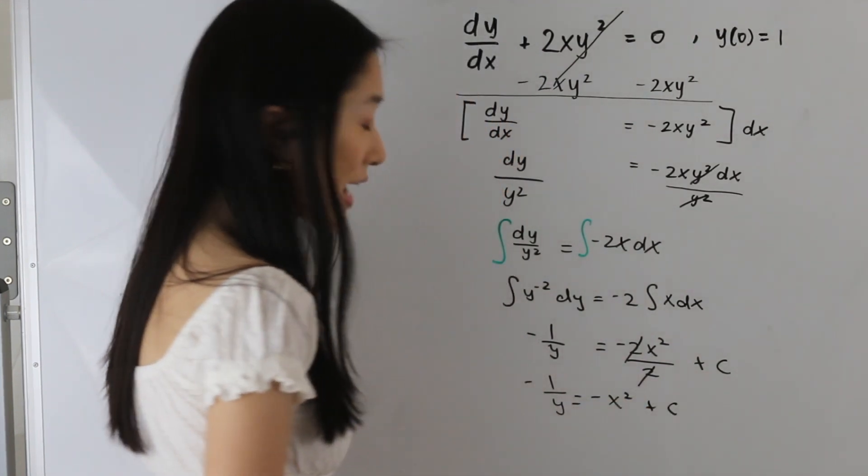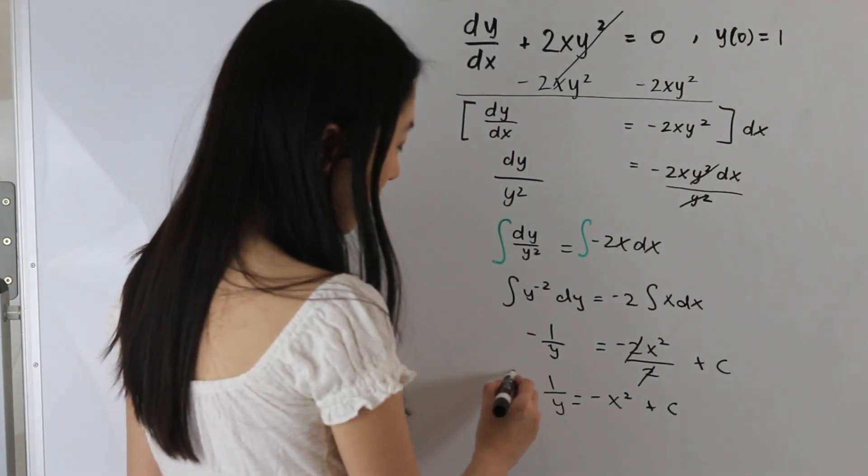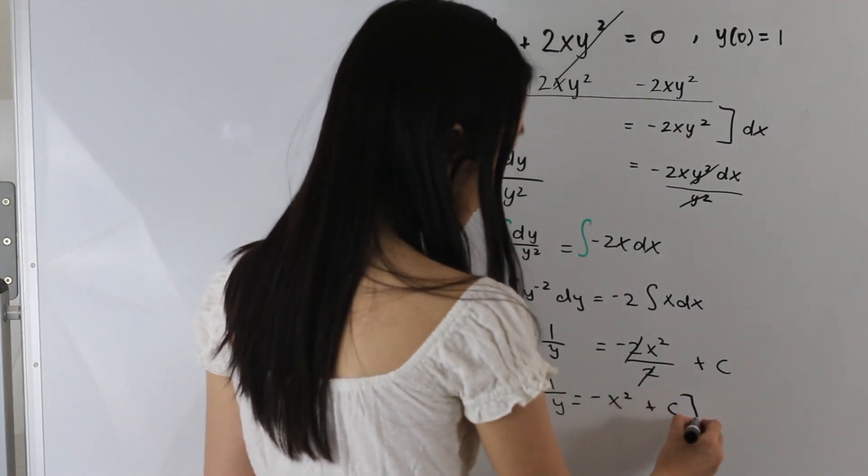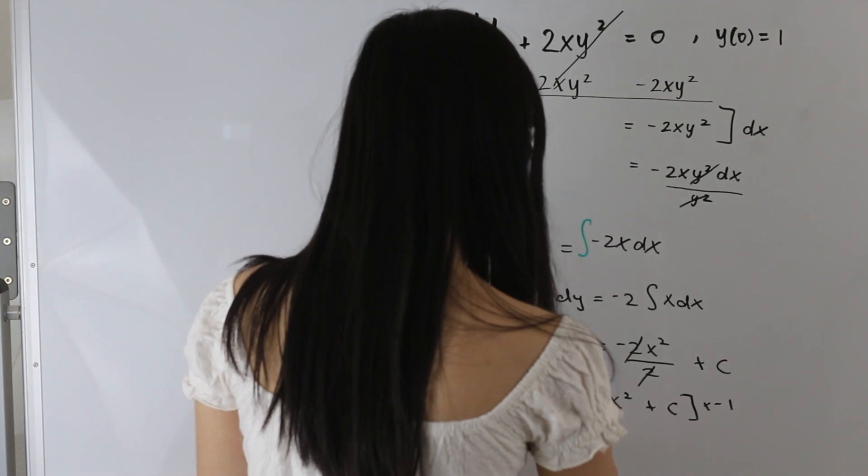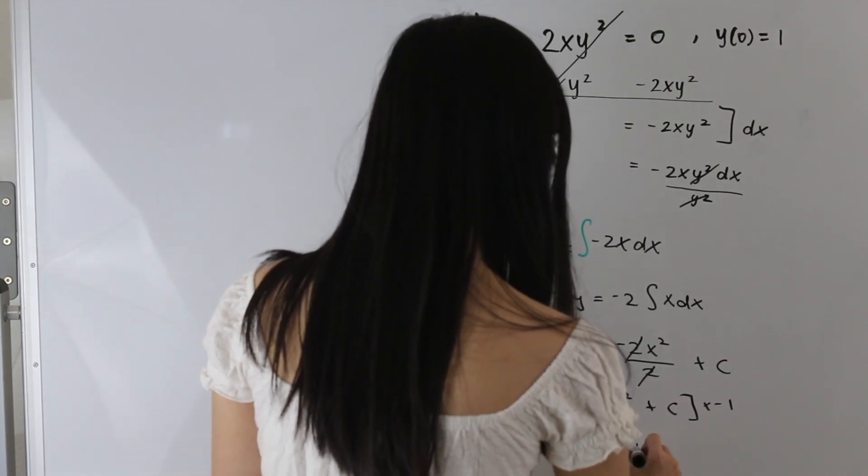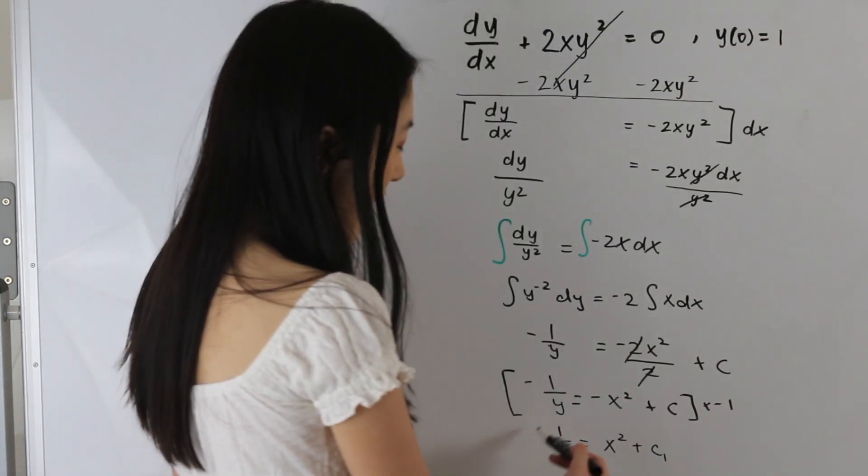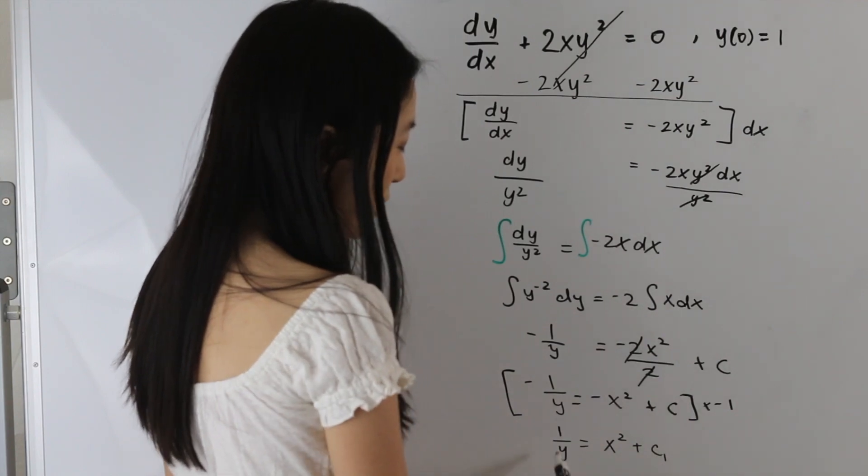So let's go ahead and multiply our entire equation by negative 1. And from here, let's go ahead and take the reciprocal of both sides so we can solve for y.